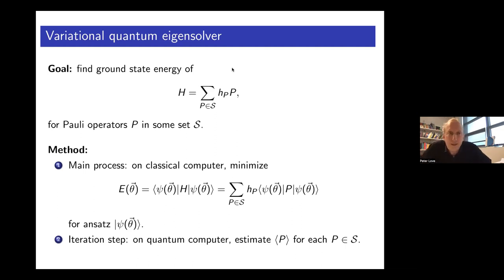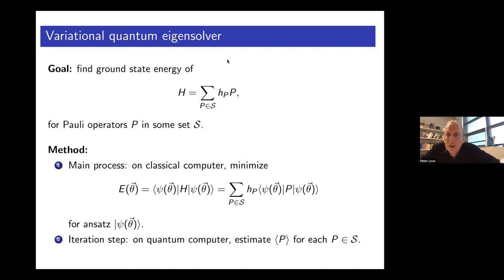This algorithm was actually invented as part of a project with Jeremy O'Brien's group when Jeremy was at Bristol. It was really a council of despair because we wanted to do phase estimation, which has a much more attractive Heisenberg-limited scaling, but we didn't have the quantum resources on Jeremy's devices to do that. So this algorithm came into being as a way of making use of the device available at that time. Jeremy has since gone on to found the company PsiQuantum in partnership with Terry Rudolph from Imperial College London, and they're hopefully building much larger machines.